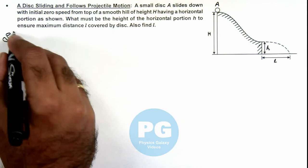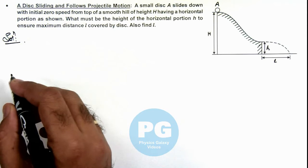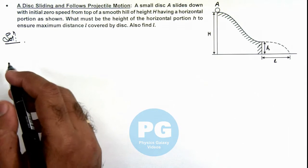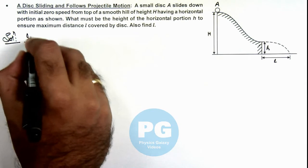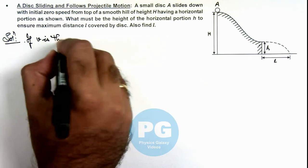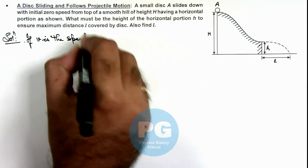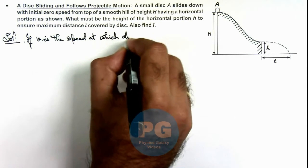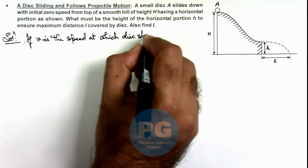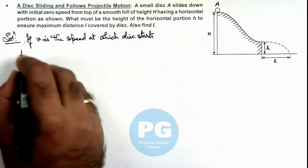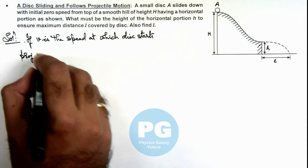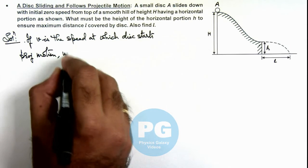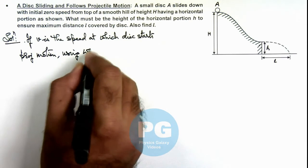Now in this solution here we can write first the speed with which the disc will come out of the horizontal portion. We can write if v is the speed at which disc starts projecting in this direction, we can write.